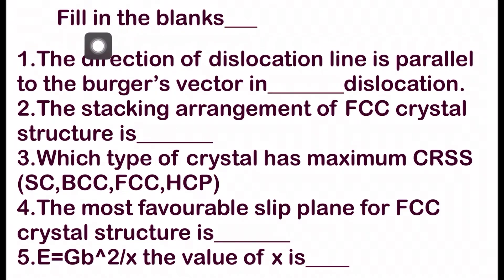Here we have a simple test that is fill in the blanks and there are five questions. The first one is: the direction of dislocation line is parallel to the Burgers vector in which type of dislocation, whether it is a screw or edge?